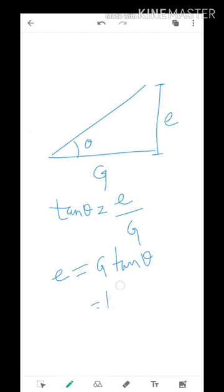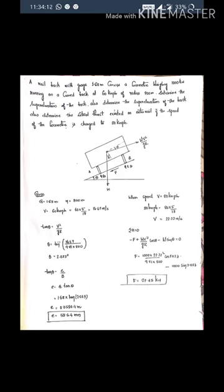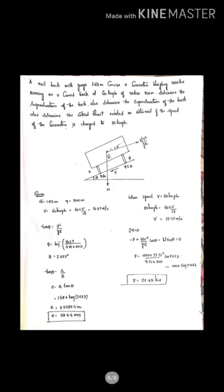The second part: determine the lateral thrust on the outer rail if the speed is changed to 80 kmph. Convert 80 kmph to m/s. The lateral force F (centrifugal force) acts on the outer wheel. Applying summation of horizontal forces equal to zero: −F + (Wv²/gr)cosθ − W sinθ = 0. Substituting all known values, only F is unknown, and solving gives the required lateral thrust on the outer rail.